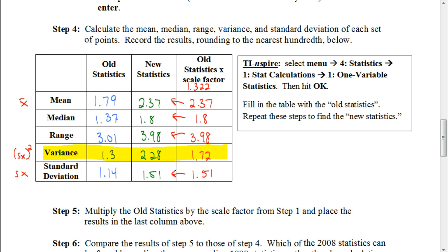Here's what we can conclude from this. If we multiply a set of numbers by a skill factor, in this case, it was 1.322. The mean, the median, the range, the standard deviation, the interquartile range, all of those values are also multiplied by 1.322 to get our new statistics. But the variance is multiplied by something different.